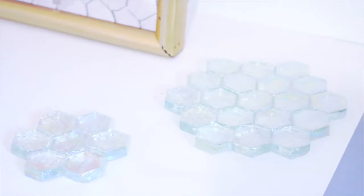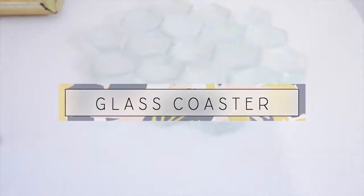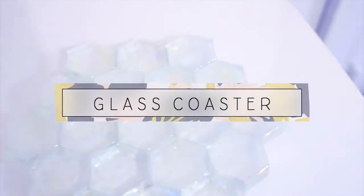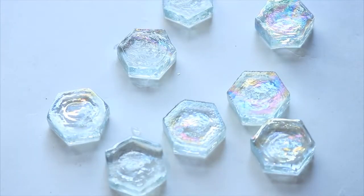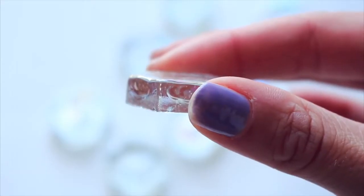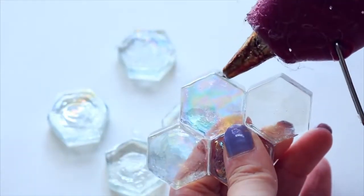Next up is a very quick DIY that I think looks really cool on a bedside table or on a dresser and it's these glass coasters. I'm using these hexagons from Michael's craft store, they were $1.99. This is what they look like and I'm just gluing them together with some hot glue.